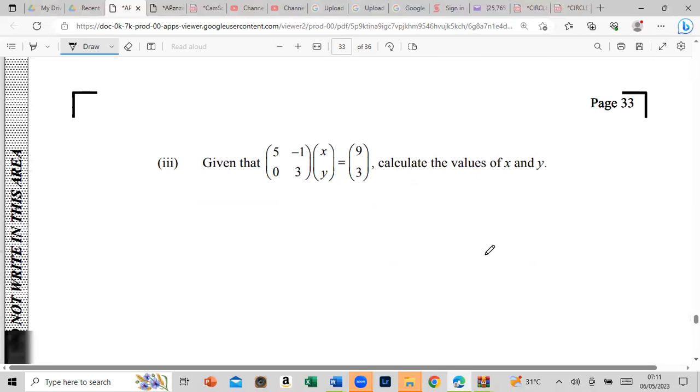Alright, so given that calculate the values of x and y. So what we're going to be doing, we're going to be finding the inverse, which we did find up here. So recall, the inverse was 1 over 15, 3, 1, 0, 5. And then we're going to multiply by 9 and 3. And that must be equal to x and y. So what it is, the first one at the top is x, the next one is y. So we're going to multiply row by a column.